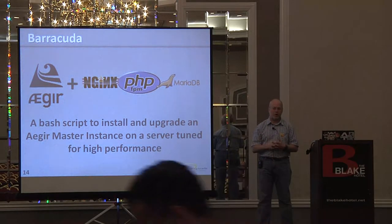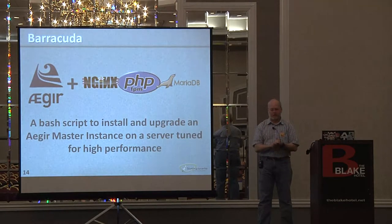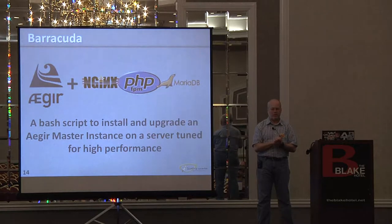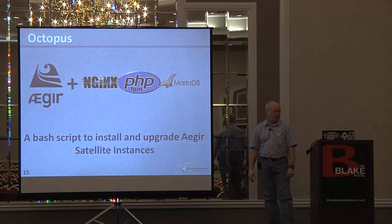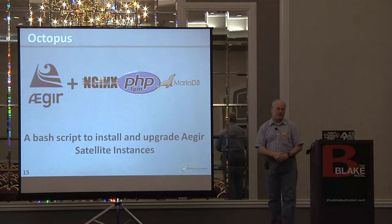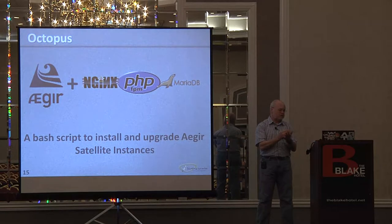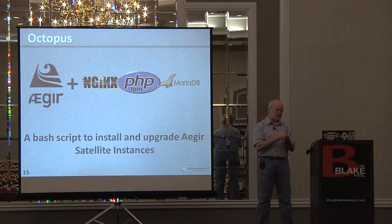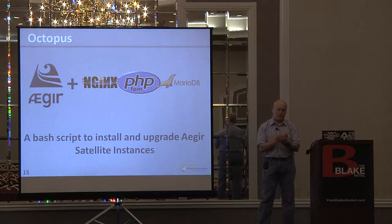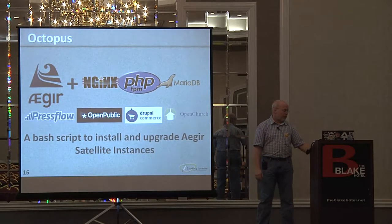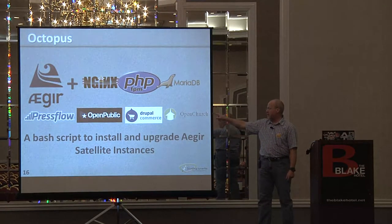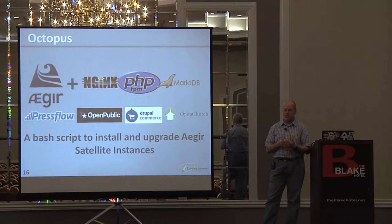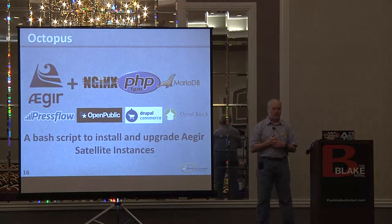I've been using this system at my TV station job and in my freelance job to manage sites at very low cost — we're talking about just buying a VPS, which is a fairly inexpensive way of getting into what would otherwise be running your own server. What Octopus does on top of Barracuda is it creates new satellite instances of Aegir, and this is done just with a bash script. The other thing Octopus does is it allows you to easily make use of Drupal distributions — not just basic Drupal, but pretty much any of the distributions that are out there.